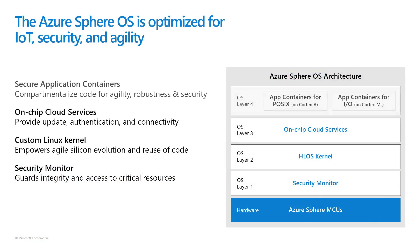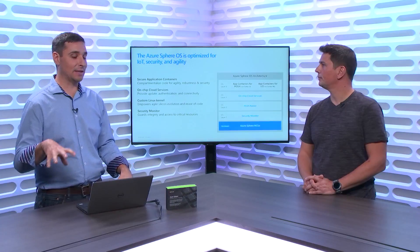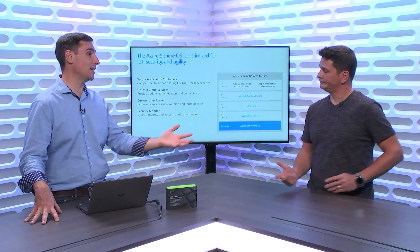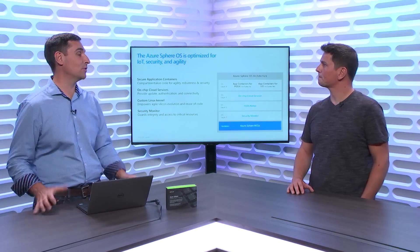This is our architecture diagram for the Azure Sphere OS. At the very bottom we have the Azure Sphere MCU, and then in the first layer we have something called the security monitor. We're taking advantage of ARM's TrustZone technology. In secure world, we have the security monitor, which guards the integrity of the device — it's the only element that can write to flash, and it's responsible for the overall acquiring and distribution of resources to different components in the chip. Above that, we have our custom Linux kernel, which has been custom-built for IoT. This isn't a Linux distribution — there's no shell, no passwords, no package manager. It's been pared down so that we can excise a lot of attack surfaces.